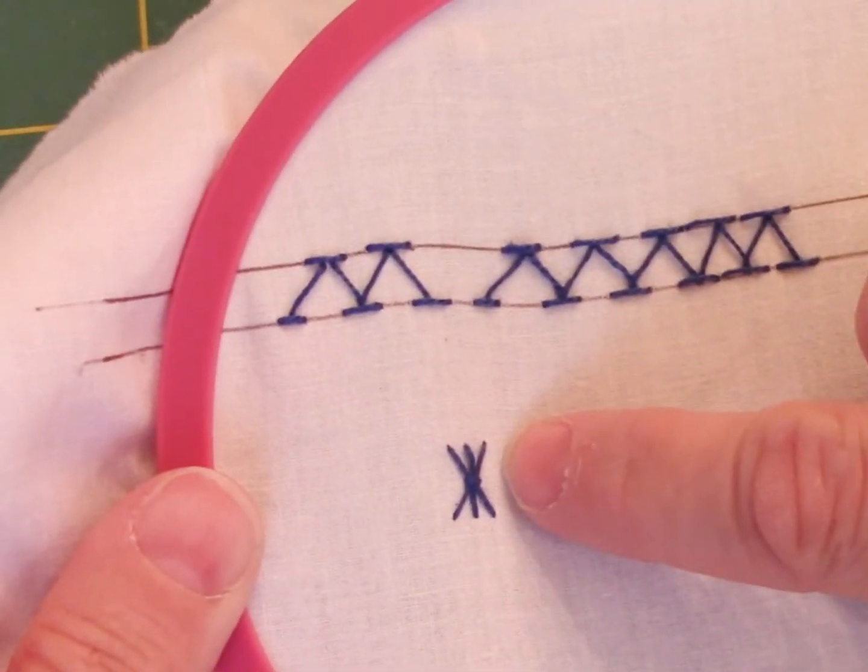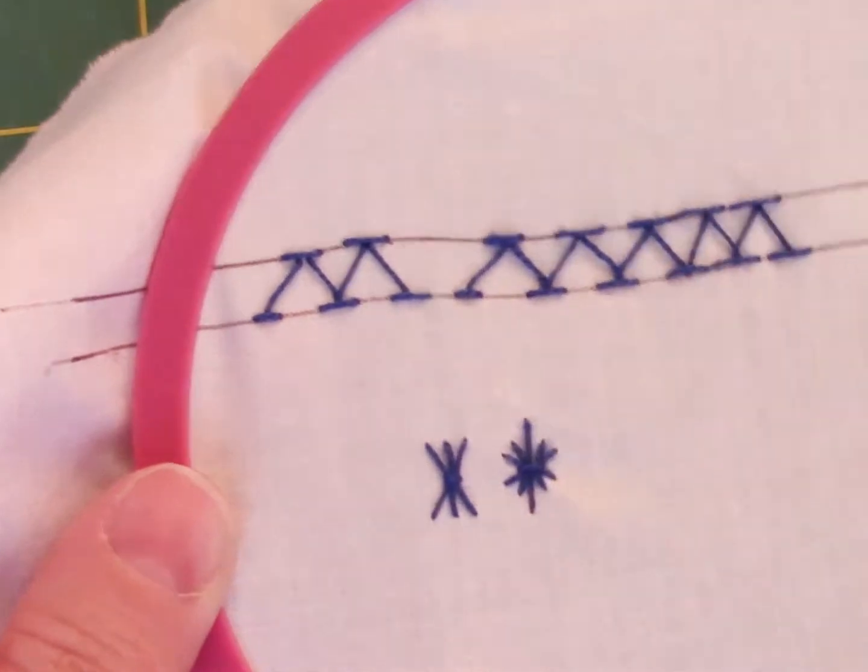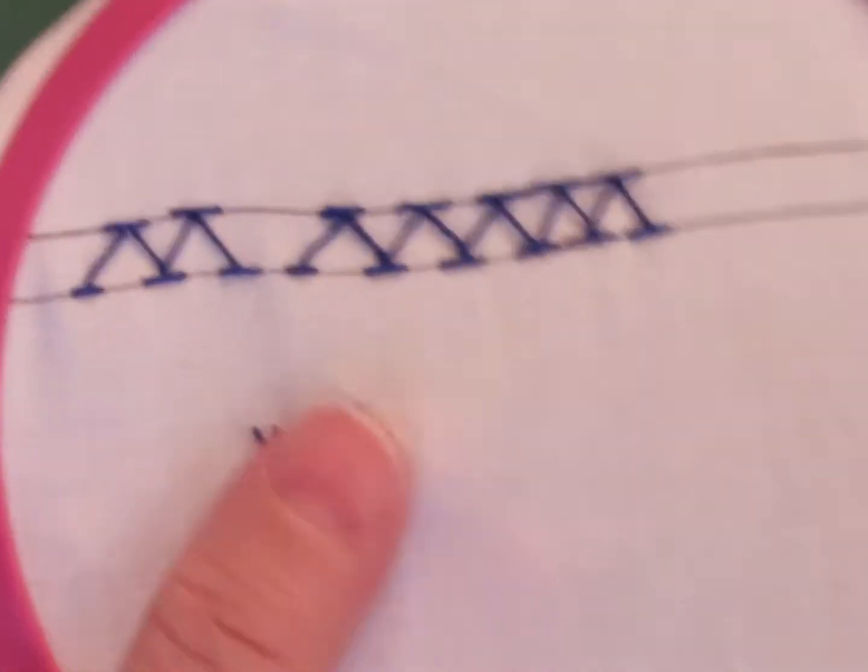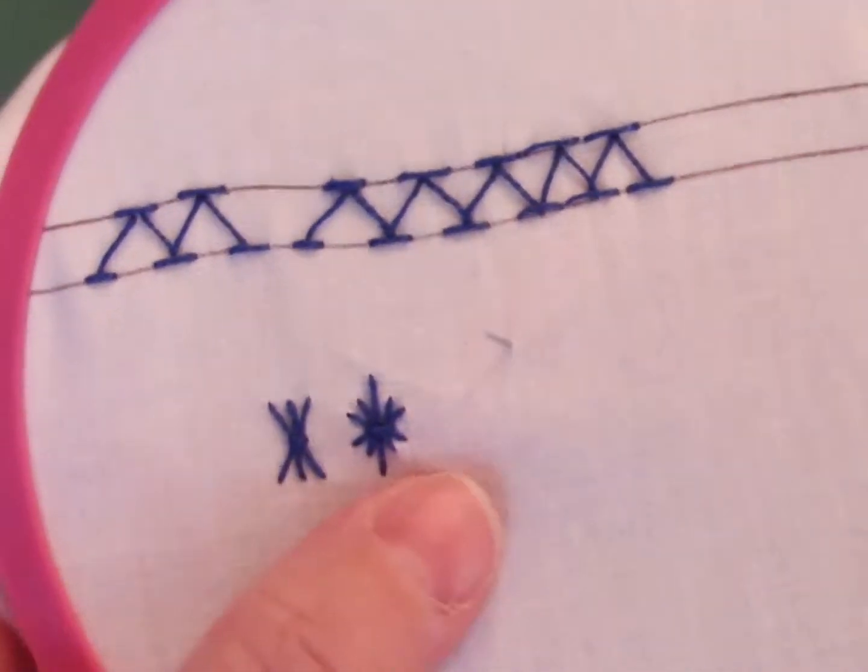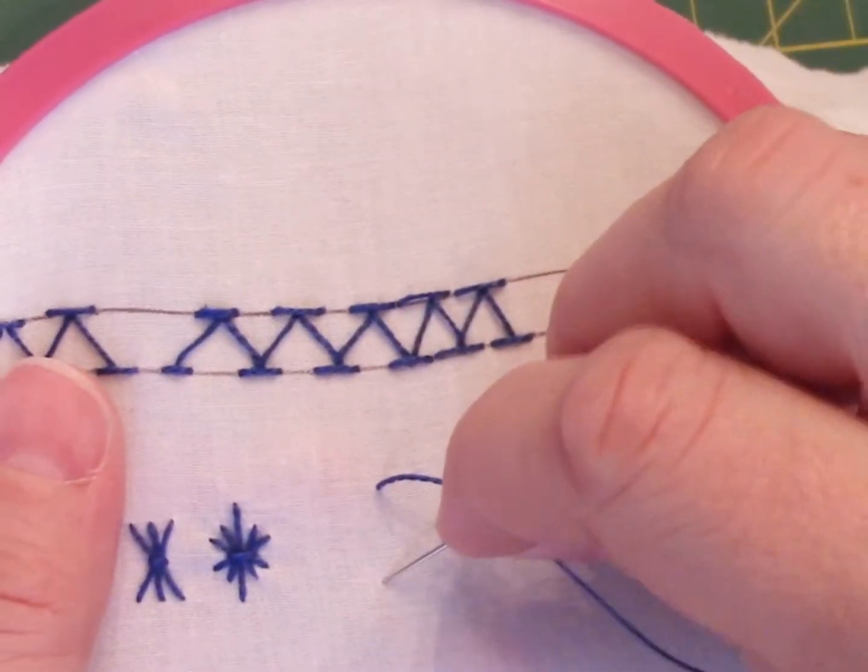This is the sheaf stitch. It is three parallel lines worked with a catch stitch. I was just playing here with varying the length of the stitch. So to make this stitch is pretty simple - we're going to make three parallel lines.